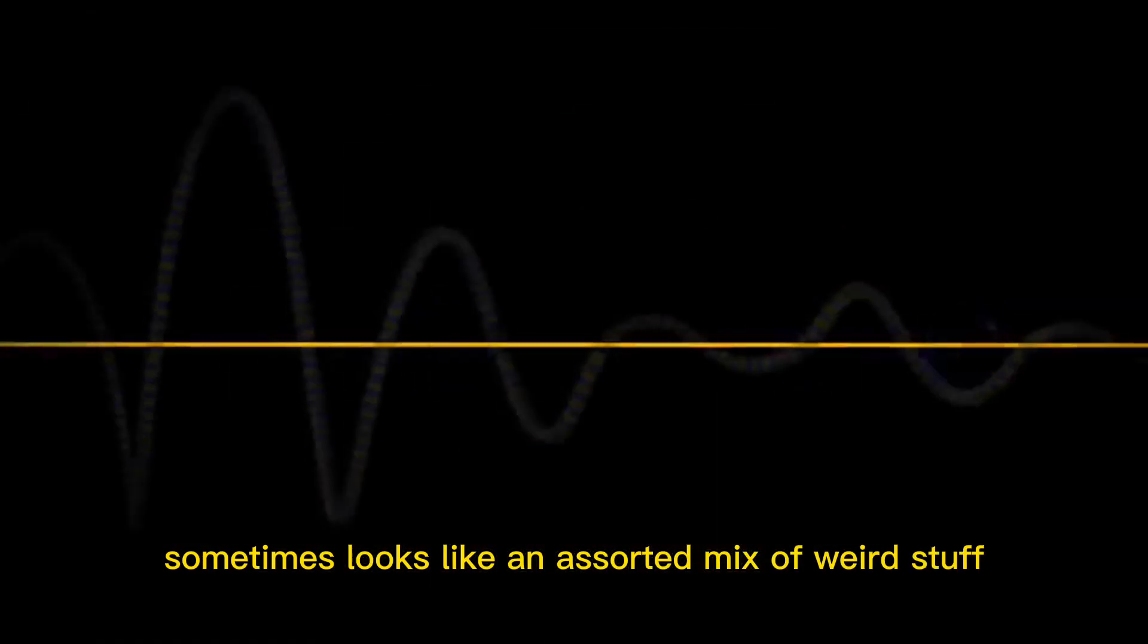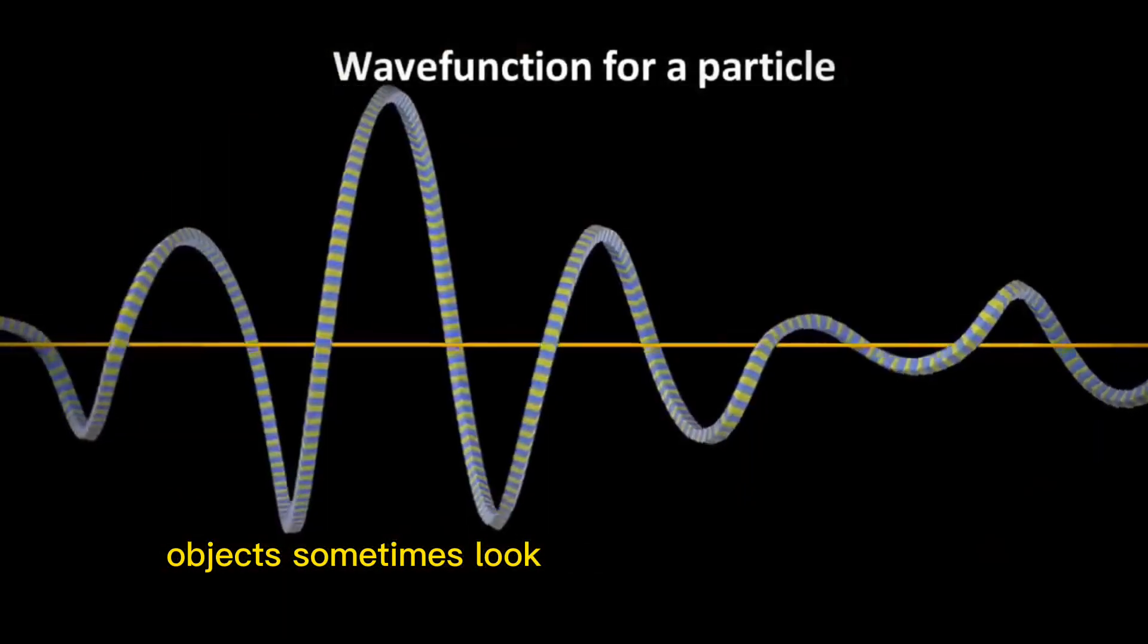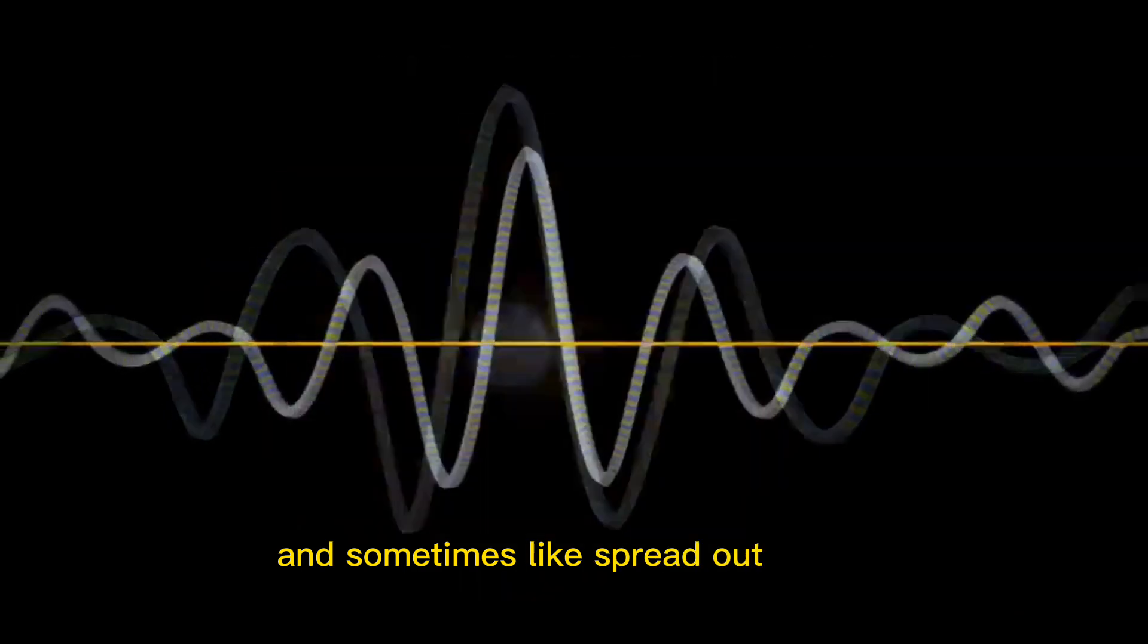Quantum mechanics sometimes looks like an assorted mix of weird stuff. There's wave-particle duality, where quantum objects sometimes look like little compact particles, and sometimes like spread out waves.